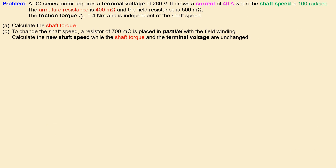We have a DC series motor that requires a terminal voltage of 260 volts and draws a current of 40 amps when the shaft speed is 100 radians per second. The armature resistance is 400 milliohms and the field resistance is 500 milliohms. The friction torque is 4 newton meters, independent of the shaft speed.